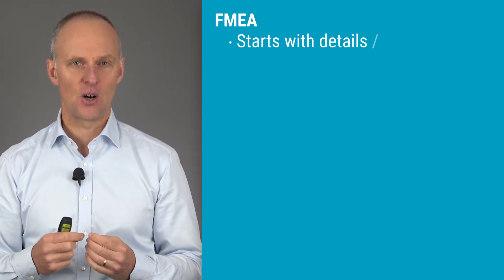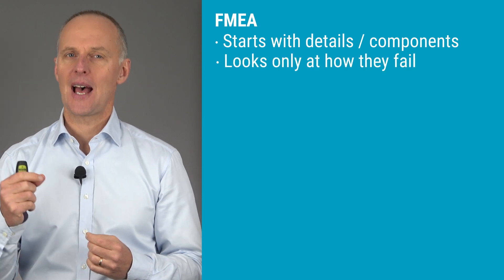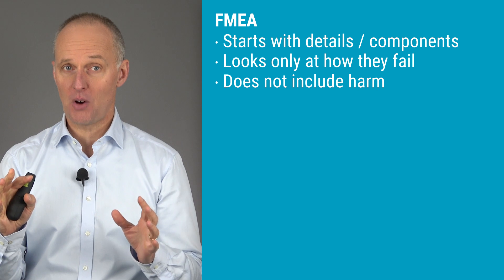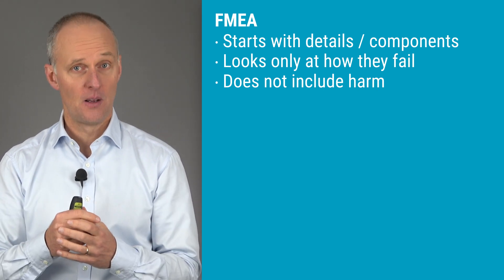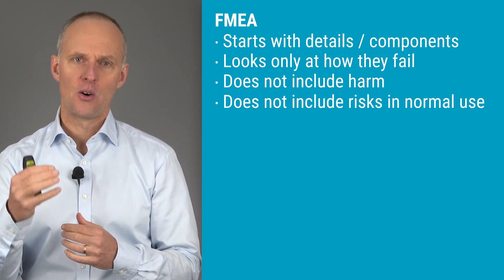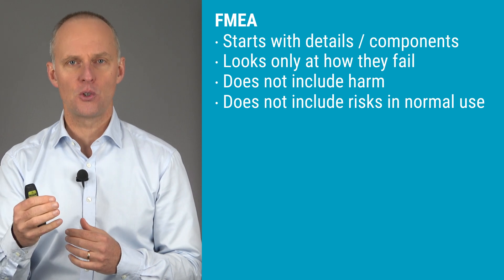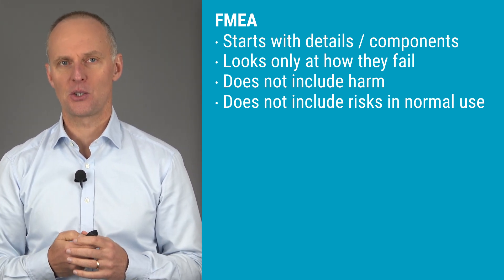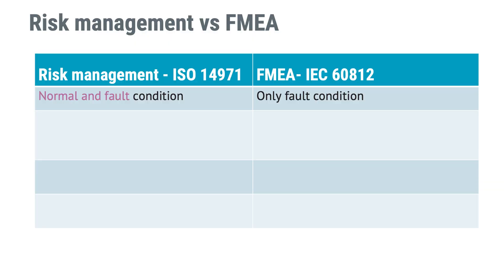Having looked at these examples, you may have noticed that FMEA starts with details or components. You would be looking at how specific components or process steps could fail, and there was no mention of harm in these FMEAs. Since we've only looked at failure risks, risks relating to normal use have not been included. Risk management according to ISO 14971, on the other hand, includes risks both from normal use, reasonably foreseeable misuse, and fault conditions — whereas FMEA only looks at risks relating to failure.